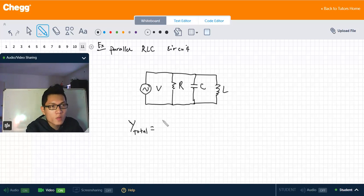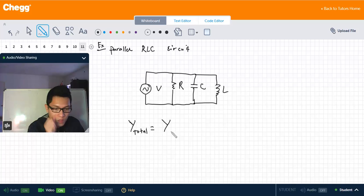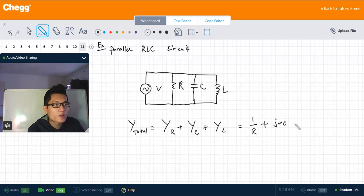So that means we have the admittance of R plus the admittance of C plus the admittance of L, and the admittance of R is just 1 over R, plus the admittance of C is jωC.